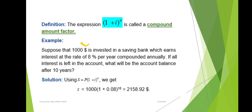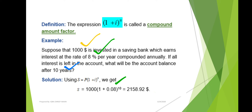Here is an example: the principal amount is one thousand dollars, the rate of interest is eight percent, and the time period is 10 years. Eight percent equals 0.08 and n equals 10. By putting all these values into the formula and using a calculator, we get a compound amount of twenty-one thousand and fifty-eight point ninety-two dollars.